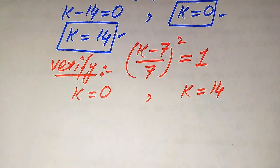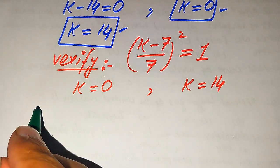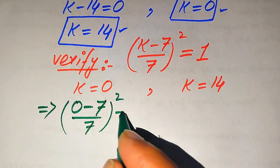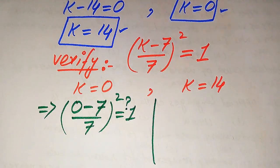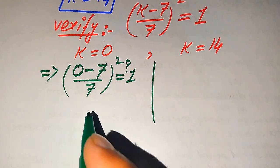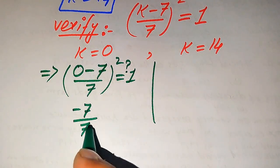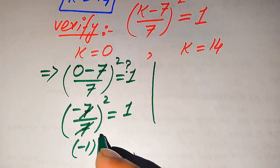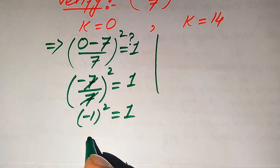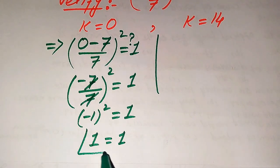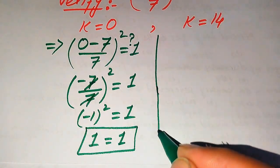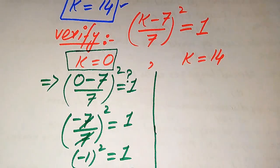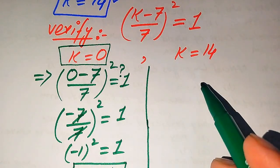When we put k equals 0 into the left-hand side, it becomes (0 minus 7) divided by 7, whole square, equals 1. Simplifying: (minus 7 divided by 7) squared equals 1. The 7 cancels out, giving (minus 1) squared equals 1, which gives 1 equals 1. Both sides are equal, so k equals 0 satisfies the given equation.